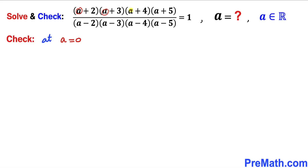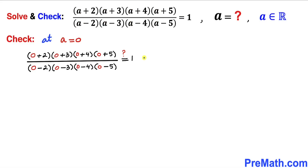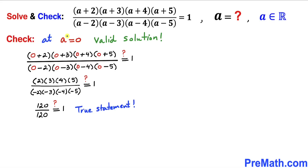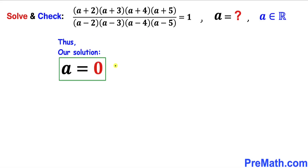Our only solution is a = 0. Let's verify by replacing every a with 0 in the original equation. The left hand side becomes (2)(3)(4)(5) over (−2)(−3)(−4)(−5), which is 120 over 120, which equals 1. Since 1 = 1 is a true statement, a = 0 is indeed our valid solution.